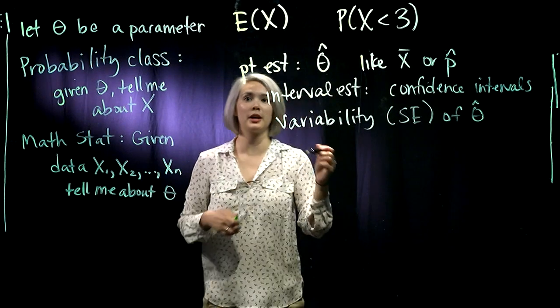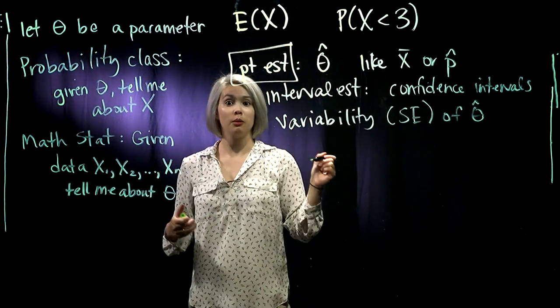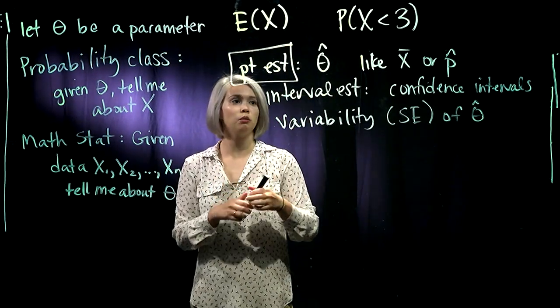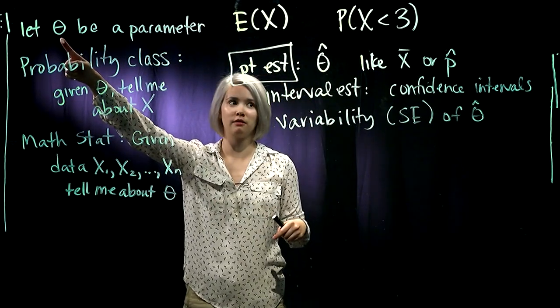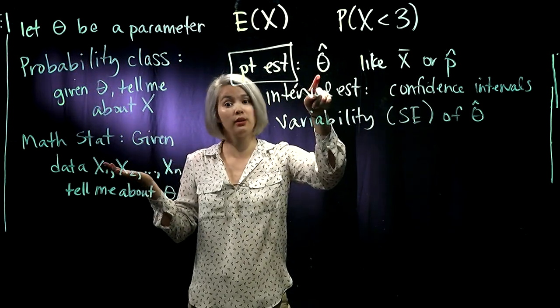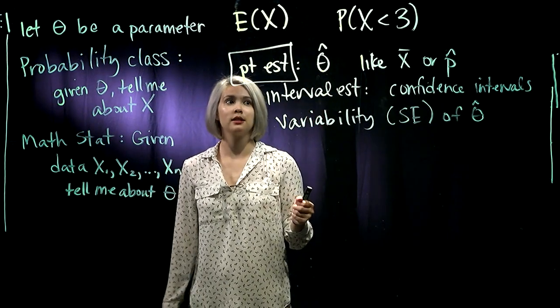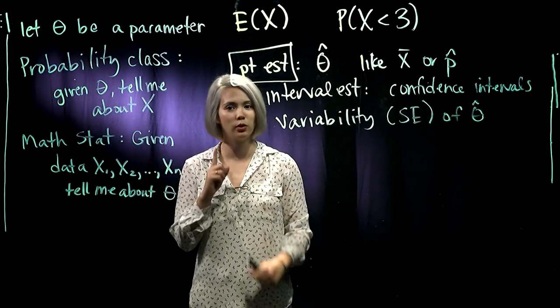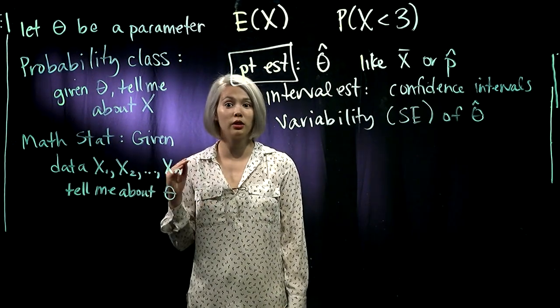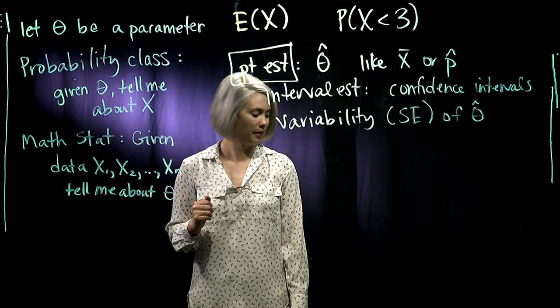The first thing we're going to be talking about in this class are point estimates. Point estimates are estimates of our parameter θ, usually denoted as θ̂. Since it's a point estimate, that means we're only guessing one single point, not an interval. We're trying to find our one best guess of what θ might be.